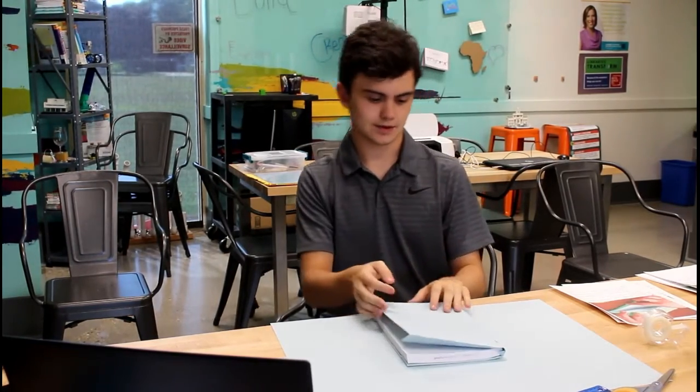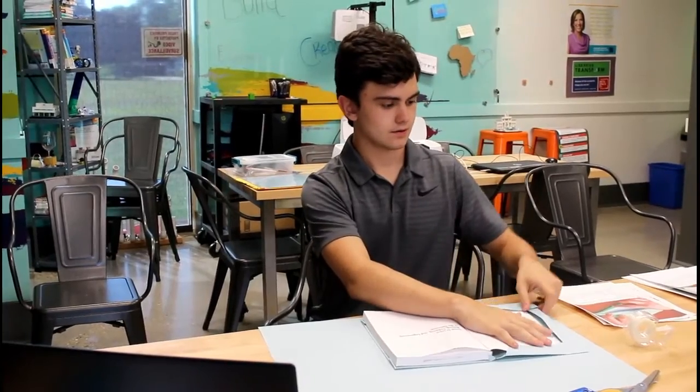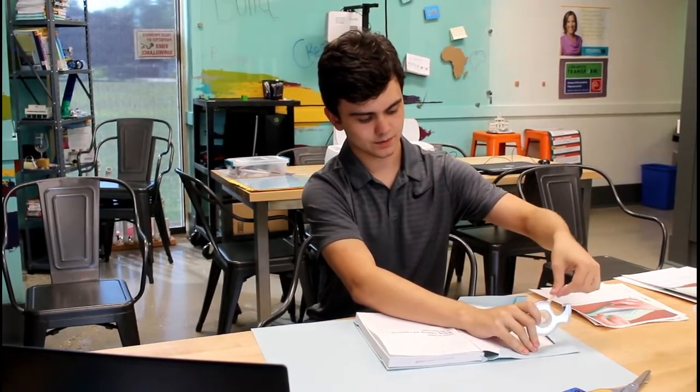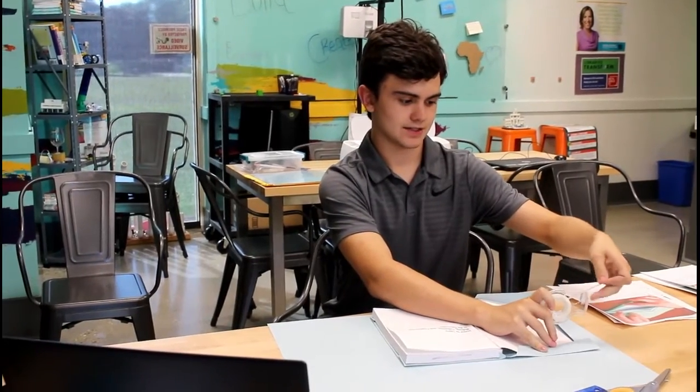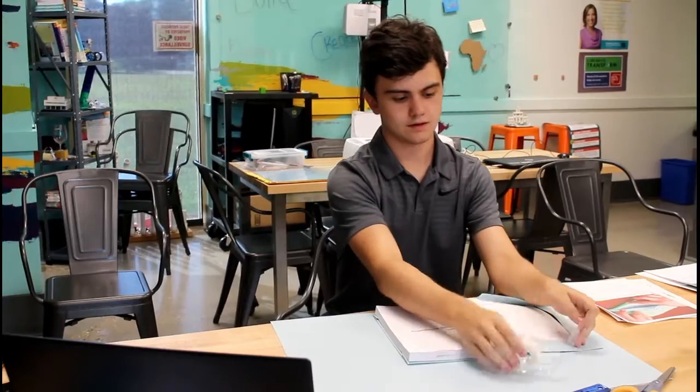So now that we have the cover on our book, we can then tape the cover. You're ultimately going to need four pieces of tape, and you're going to tape each corner of the cover.